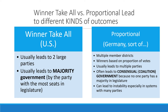The downside of winner-take-all is that more extreme voices — like a Green Party or Libertarian Party — are not represented in government. The positive of proportional representation is that lots of political parties can represent many different points of view, sometimes more extreme ones. But the downside of proportional representation is that it can lead to instability because the more parties in a coalition government, the more likely that coalition is to fall apart.